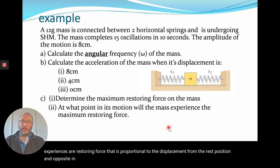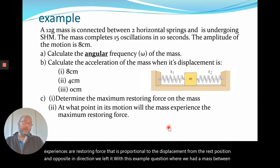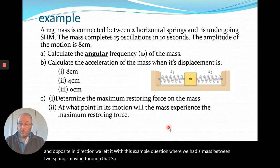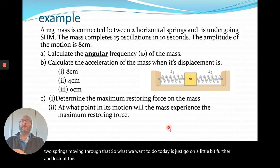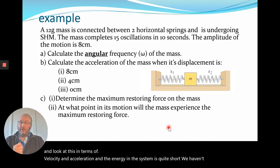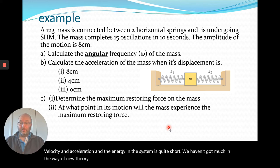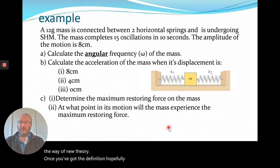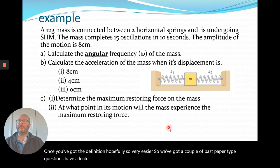We left it with an example question where we had a mass between two springs and went through that. What we want to do today is go a little bit further and look at this in terms of the velocity, acceleration, and the energy in the system. We haven't got much in the way of new theory — once you've got the definition, hopefully it's a bit easier — so we've got a couple of past paper type questions to look at afterwards.